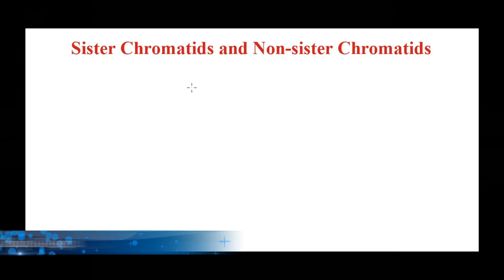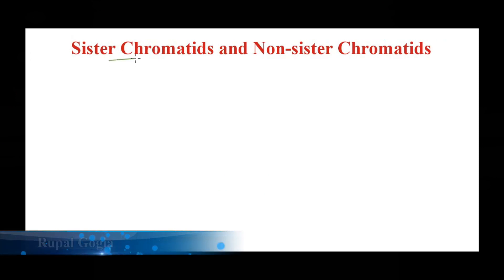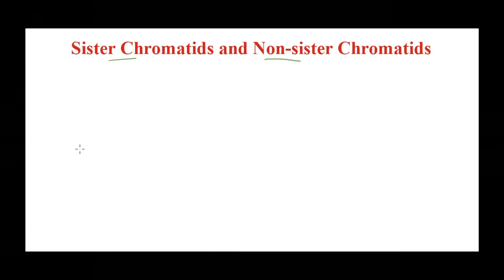Welcome back. Today we are talking about the difference between sister chromatids and non-sister chromatids. When the cell is undergoing cell division, all the chromosomes need to replicate because that's how the new daughter cells would get a complete set of chromosomes. So all the chromosomes would undergo replication and produce a copy — let's see how it looks.